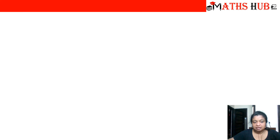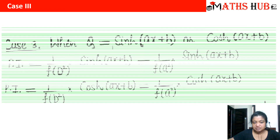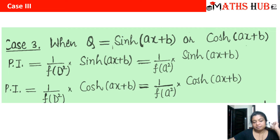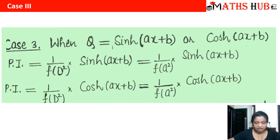The third case is when we have sinh(ax + b) or cosh(ax + b). In that case we replace D² with +a². The same case-failure procedure applies.